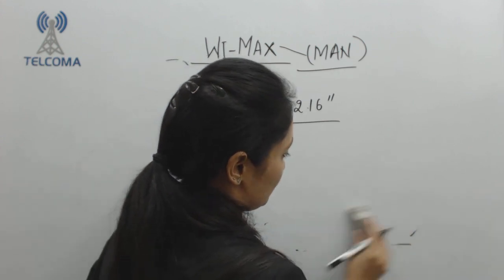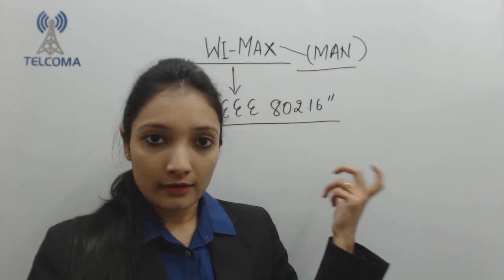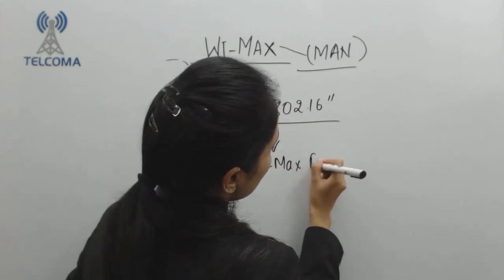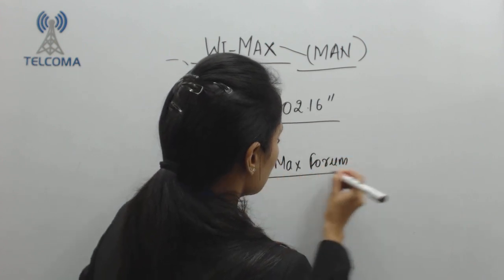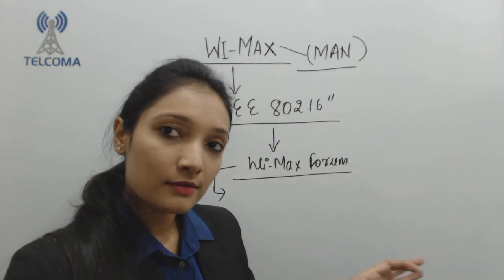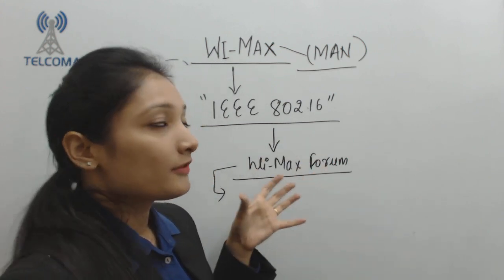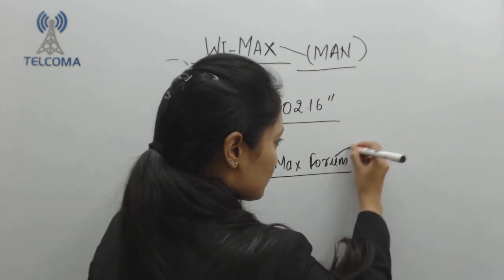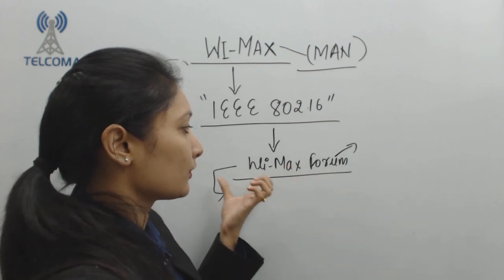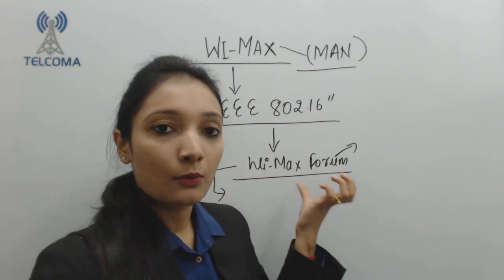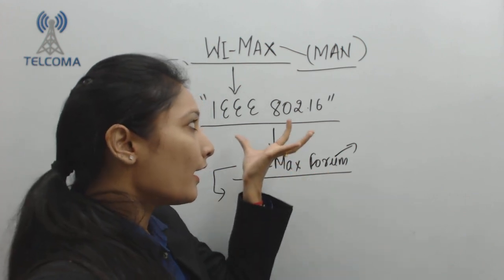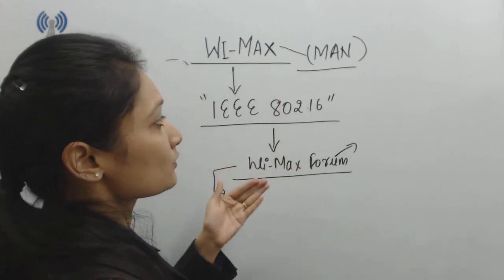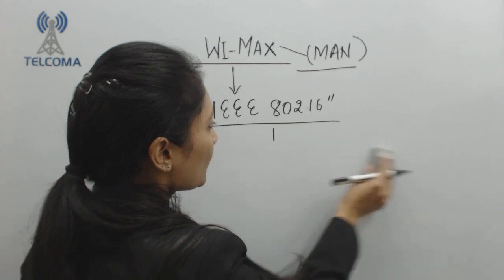A WiMAX Forum was created for the commercial standardization of IEEE 802.16. According to this WiMAX Forum, certain standards were set — including the distance it should cover and the peak services it should deliver. This organization serves as the central body for commercial standardization of IEEE 802.16.